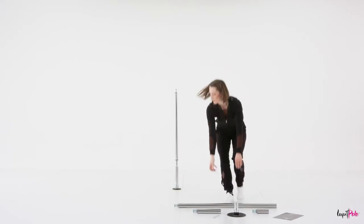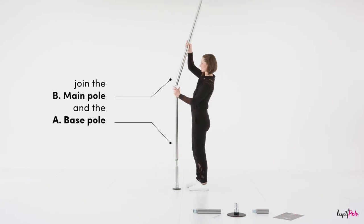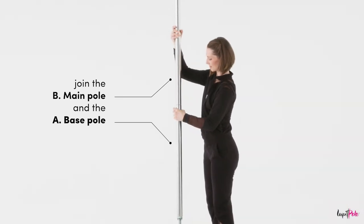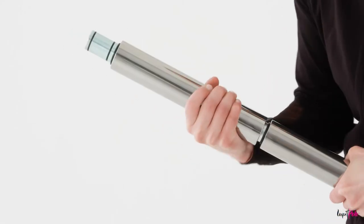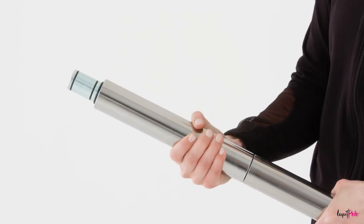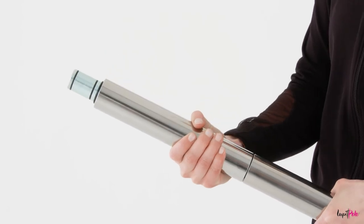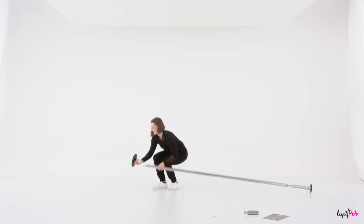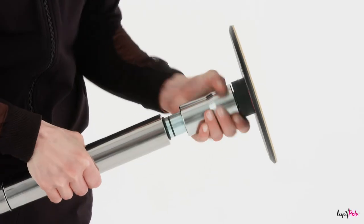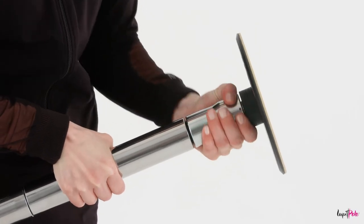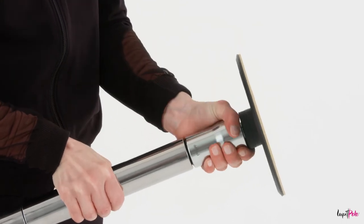To begin the installation, join B. Main Pole and A. Base Pole. Add the required extension combinations C, D, or F, depending on your ceiling height, followed by the E upper disc.